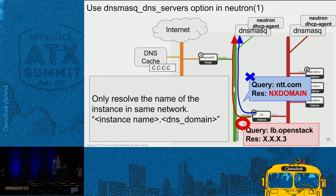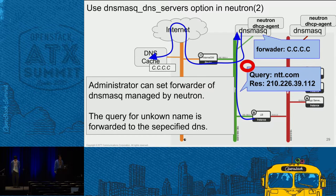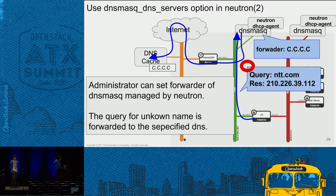First, I'll share basic knowledge of DNS masq in Neutron managed networks. If DNS masq is used as the DHCP driver, it provides a DNS function as well as DHCP. So the user can use the DHCP server as DNS. But the user can only resolve instance names by default, and can't resolve public domains such as ntt.com. In the DHCP agent, we can set a forwarder on DNS masq in order to resolve unknown domains. If it's set, the query for an unknown name is forwarded to the specified DNS, and we are able to resolve public domains.